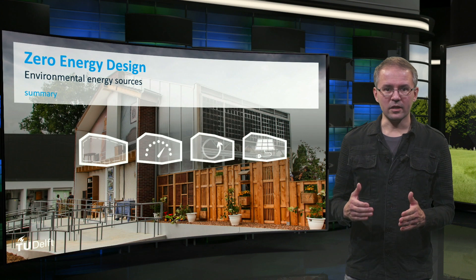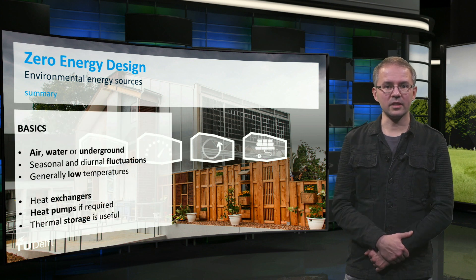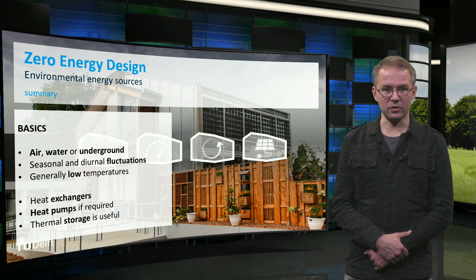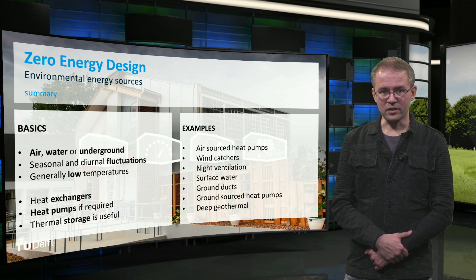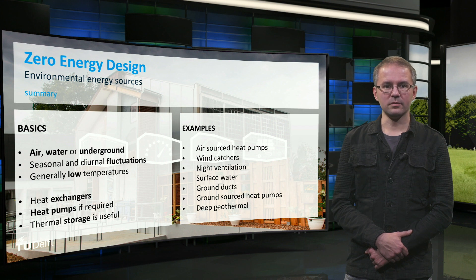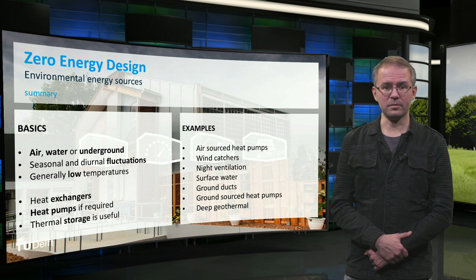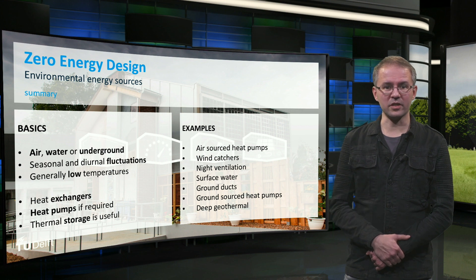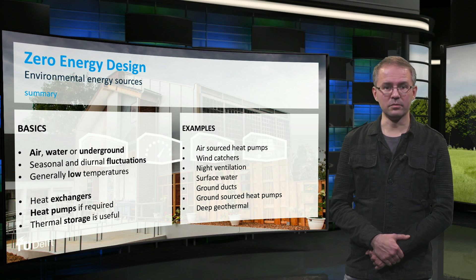So to recap: the air, surface water and ground around and under your building can be used for heating and cooling using heat exchangers. Because source temperatures are low and fluctuate daily and seasonally, they are sometimes paired with a heat pump and thermal storage. In this lecture we have seen air-sourced heat pumps — also known as air conditioning — wind catchers, night ventilation, surface water, ground ducts, ground-sourced heat pumps both horizontal and vertical, and deep geothermal wells. As you can see, there are a lot of possibilities, but they all depend on the local environmental circumstances. So find projects that use these sources in the same region as your building design to see what you can do. Thank you for your attention.